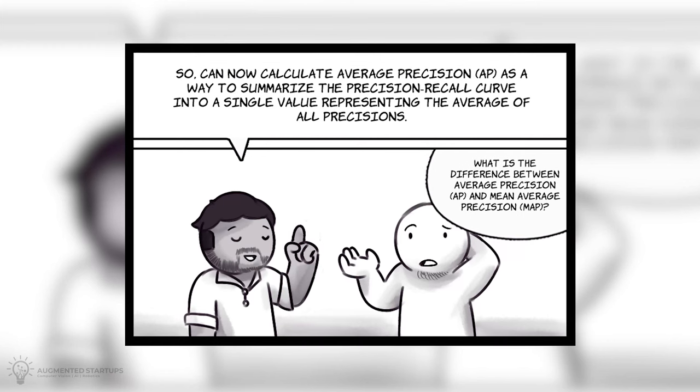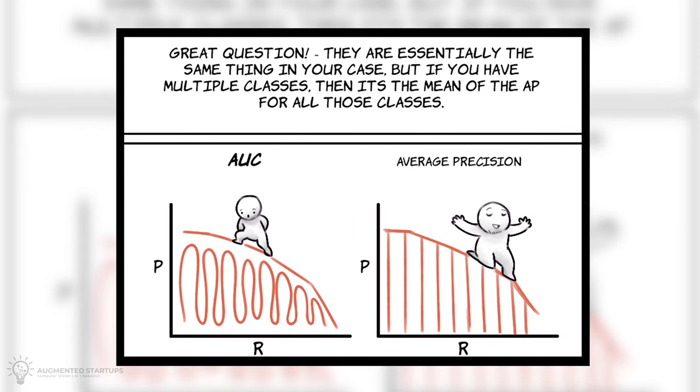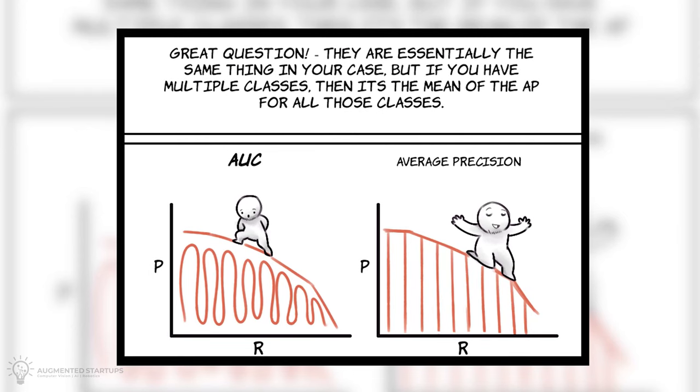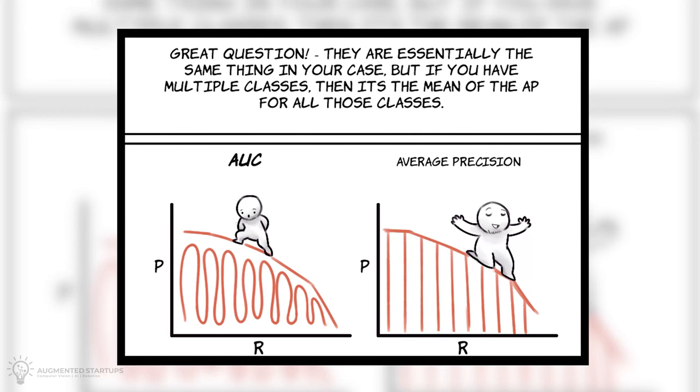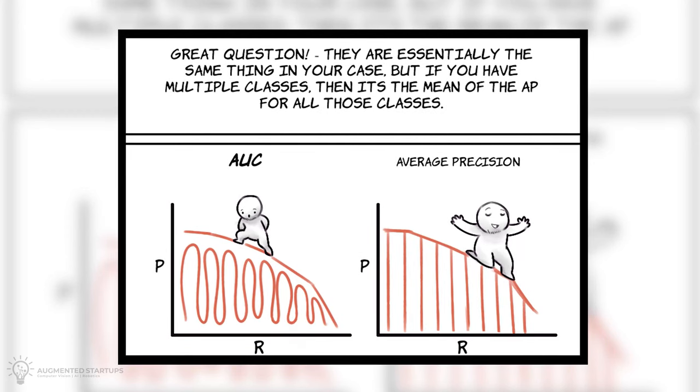What is the difference between average precision, AP, and mean average precision, MAP? Great question. They are essentially the same thing in your case. But if you have multiple classes, then it's the mean of the AP for all those classes.